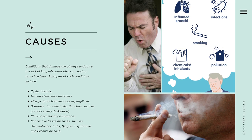Disorders that affect cilia function, such as primary ciliary dyskinesia. Cilia are small, hair-like structures that line your airways and help clear mucus out of them. Then we have chronic pulmonary aspiration, a condition in which you inhale food, liquids, saliva, or vomited stomach contents into your lungs. Aspiration can inflame the airways, which can lead to bronchiectasis. Connective tissue diseases such as rheumatoid arthritis, Sjogren's syndrome, and Crohn's disease can also be causes.